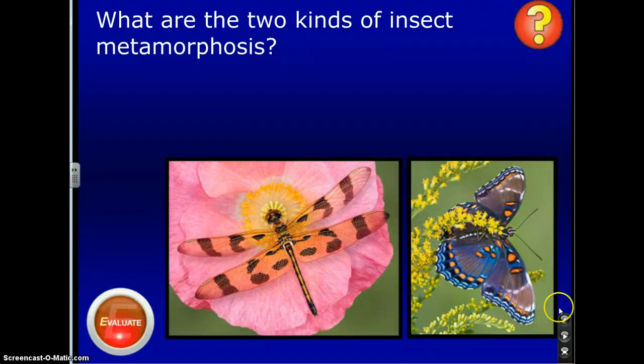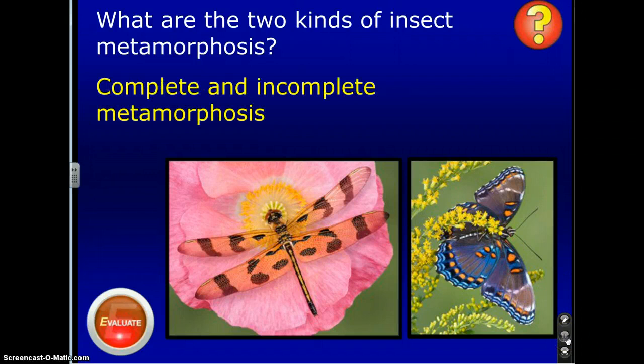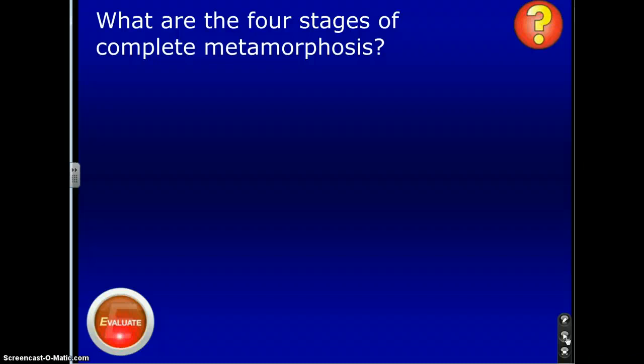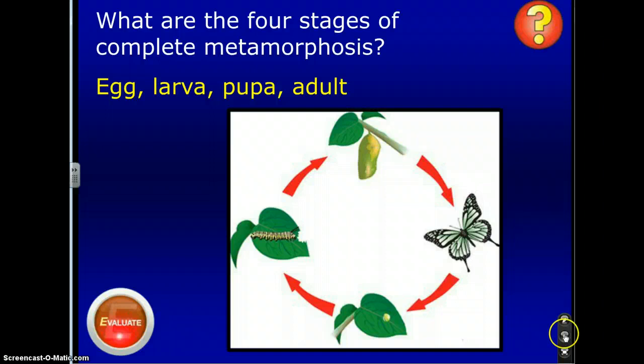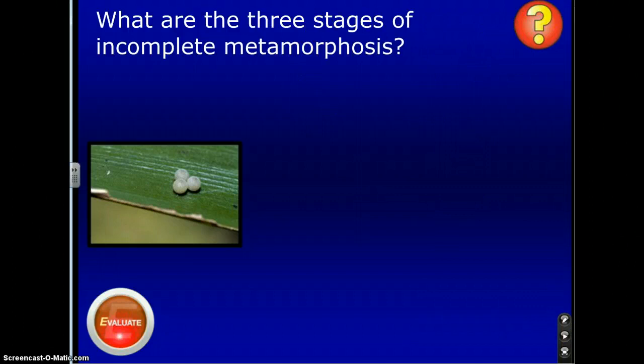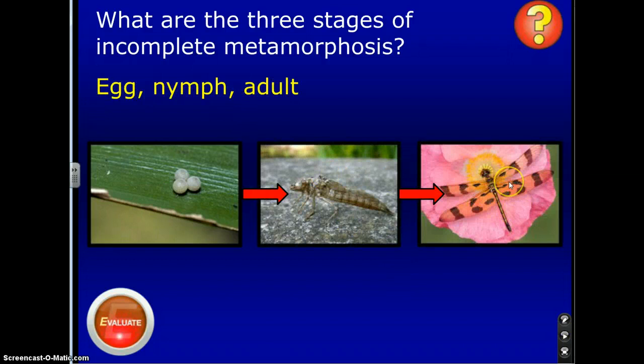Now for a quick quiz — pay attention, because these are the questions coming up on your quiz tomorrow. What are the two kinds of insect metamorphosis? Complete and incomplete. What are the four stages of complete metamorphosis? You have your egg, moving to the larva, then the pupa, then the adult. What are the three stages of incomplete metamorphosis? The egg, the nymph, and the adult.